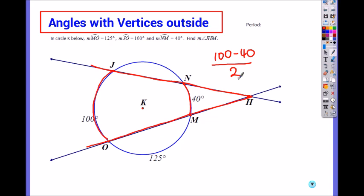When it's inside what do we do? We add it and divide by two. When it's outside you add and divide—I mean subtract and divide by two. So it's 60 divided by two.